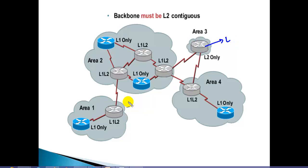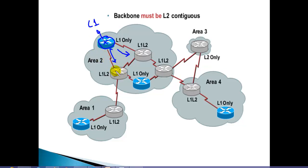The three border routers discussed must be Level 1/Level 2. For a specific internal router, we can configure it as Level 1, because it is only exchanging routes with other routers within the same area. However, a border router cannot be changed to Level 1 because that would affect its communication with routers in different areas.